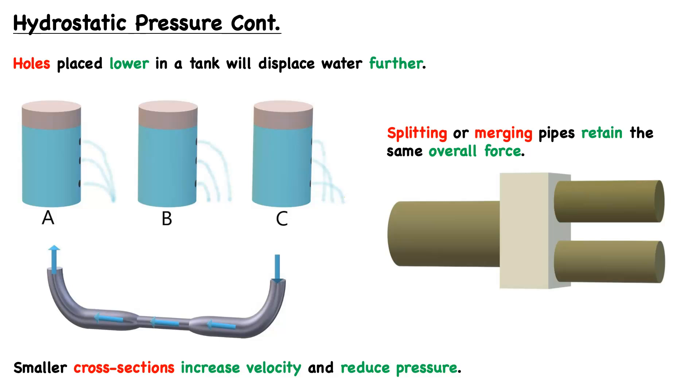Moving on from this example, there are a few important cases that we should cover. The first is that of a splitting or merging pipe. If you have a splitting or merging pipe, they retain the same overall force. For example, in this case we have one larger pipe where water traveling through will break into two different paths. Yes, it will be distributed across the two pipes, but the overall force will remain the same.